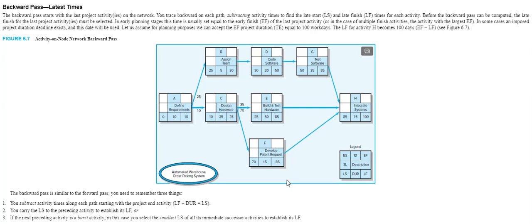Now we have a dilemma. Remember in the case of the forward pass, when you have multiple activities going into node H, the rule was you take the longest of the activities. When you're doing the backward pass, if you have multiple activities feeding into a particular node going backwards, you then take the shortest of the activities. So F is 70, E is 35, the shortest duration is 35.